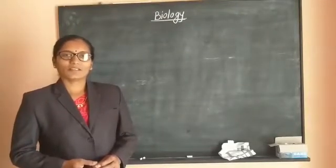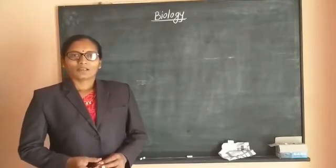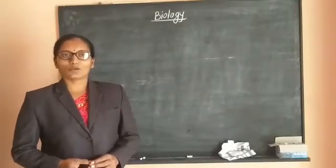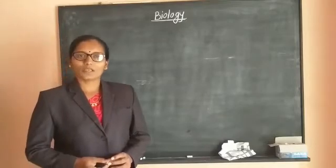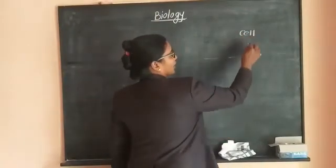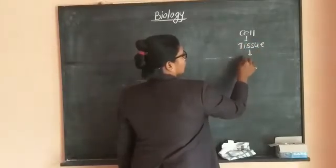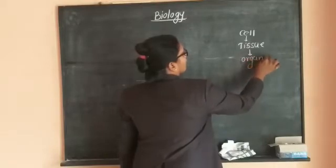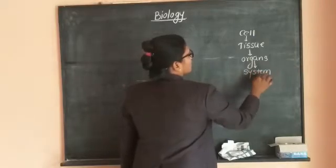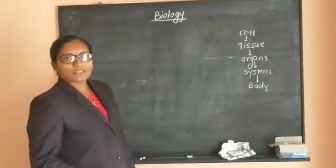Good morning students. In 11th standard, we studied about some of the human body systems. Now in 12th standard, we are going to study about the human body systems not included in 11th standard. In the case of human beings, the basic structural and functional unit is the cell. Groups of cells form tissue, groups of tissue form organs, and when a number of organs combine together, they form a system, and a number of systems form the human body.